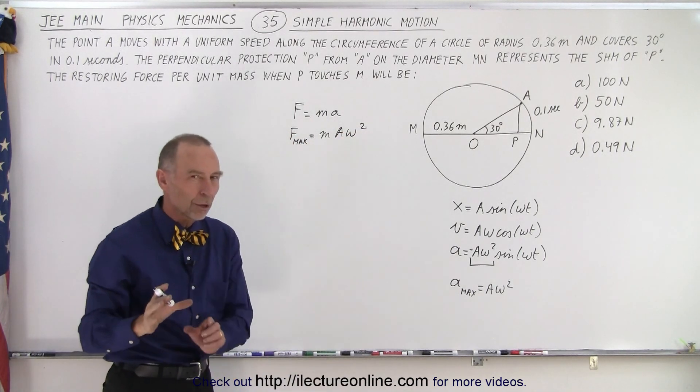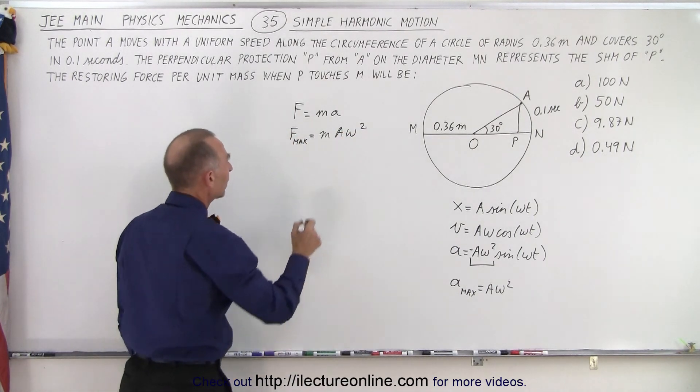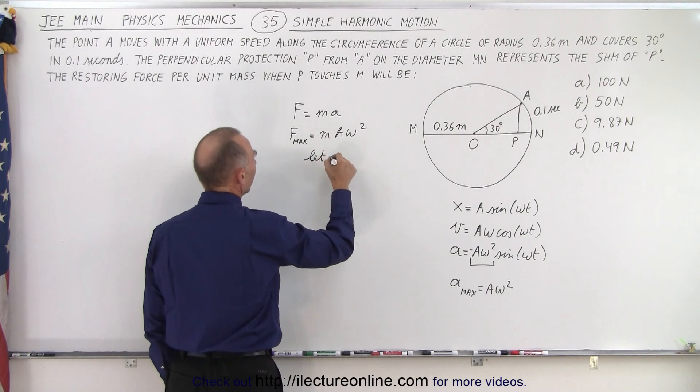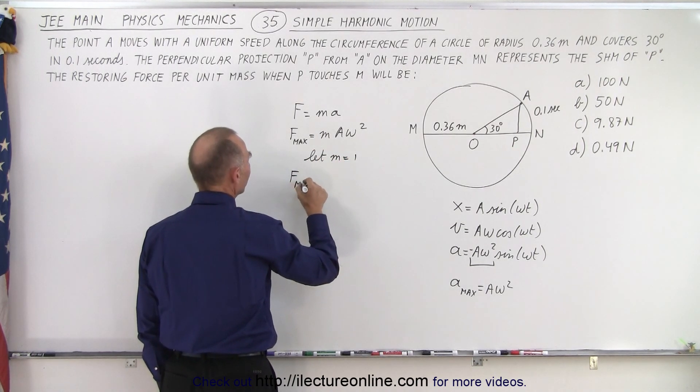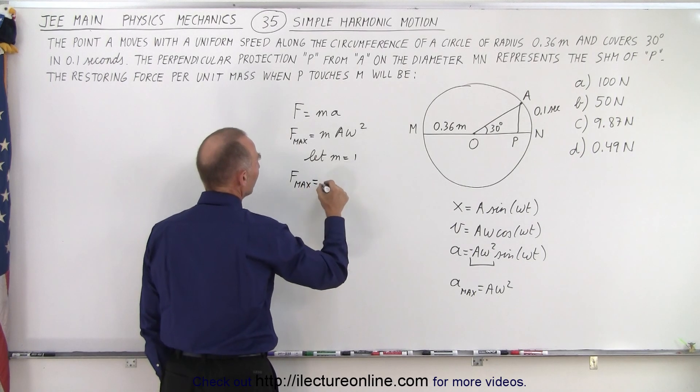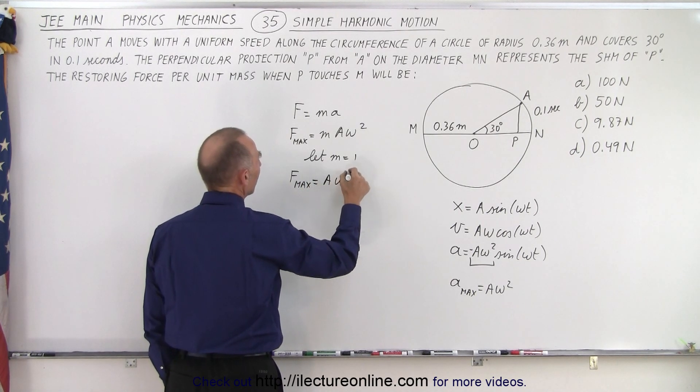But now, since we're dealing with the per unit mass, we can let M equals one. So we can say that F max, the maximum restoring force, is simply going to be equal to A times Omega squared.